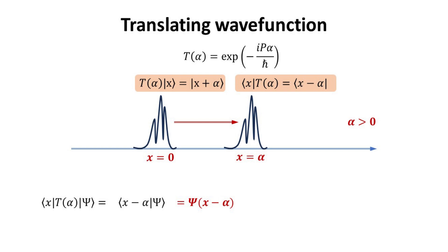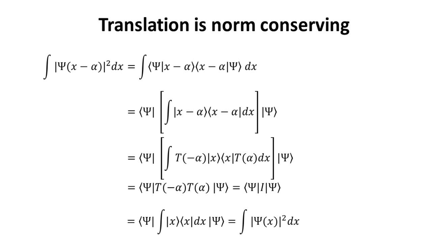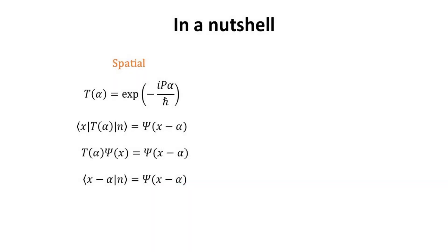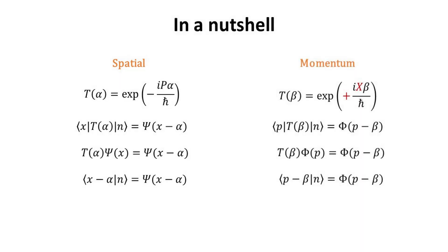This trick is useful when discussing topics such as coherent states in the next video. The translation operation preserves the norm of the wave function, as required by particle conservation — this property is ensured by the fact that the translation operator is unitary. In a nutshell, we have shown how the spatial translation operator faithfully translates the wave function in position coordinates. Analogous translation relations can also be derived for the momentum case, where the position operator is the generator of translation, and note the positive sign in the exponent for forward translation.